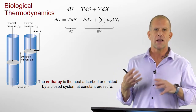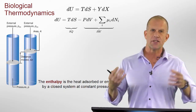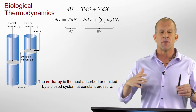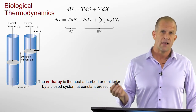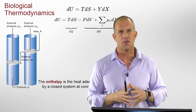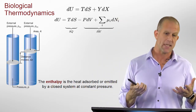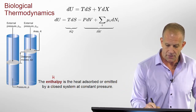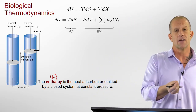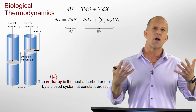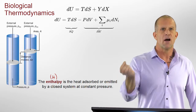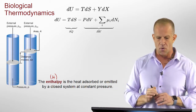When we look at the internal energy of a system, we often want to reframe it into variables that are more natural for the case we're working in. This leads to different types of energy besides internal energy that we talk about in biological thermodynamics. One of the most common is enthalpy, represented by a capital H. It's an energy, just like internal energy, but it has different properties — it depends on different variables and has a practical sense for being used under different conditions.